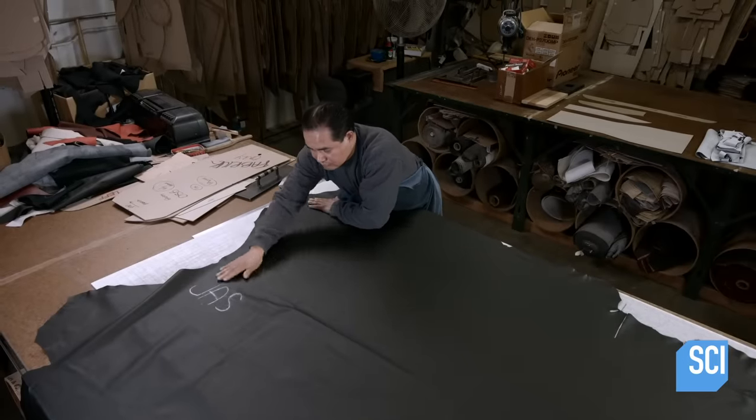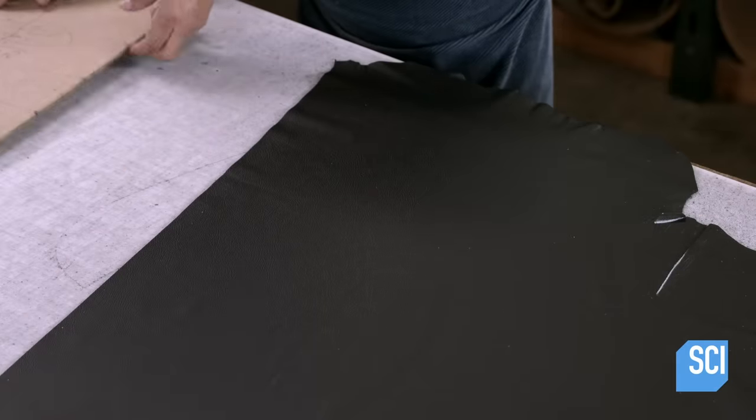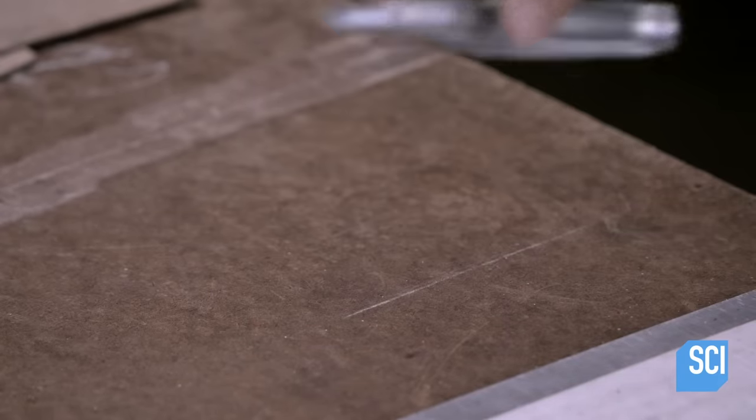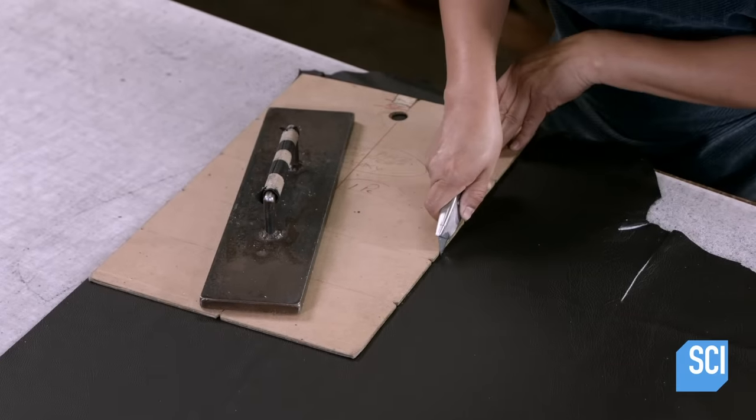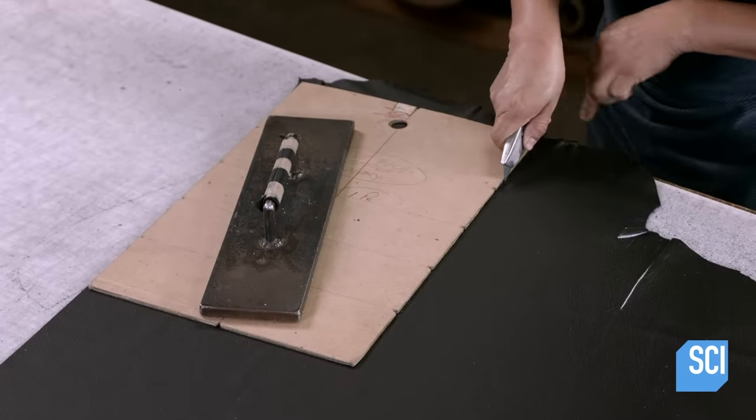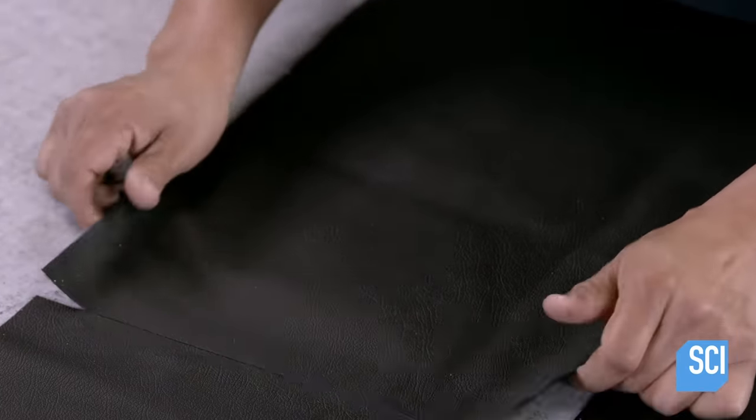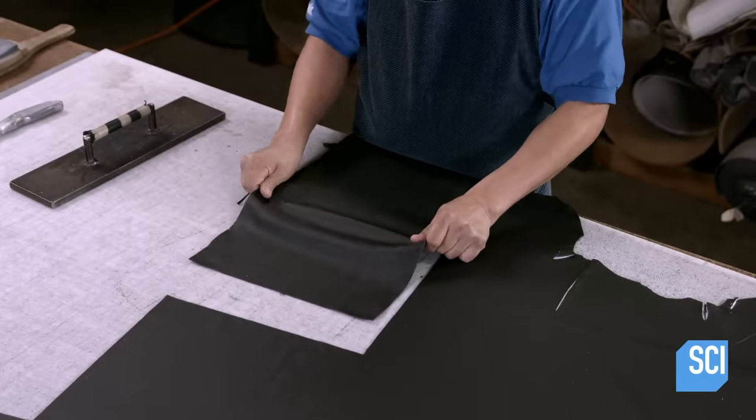In the upholstery department, another worker smooths a leather hide so that it sits evenly on the cutting table. He cuts out the patterns following cardboard templates. As he cuts, he works around the natural flaws in the hide, making calculated decisions to minimize waste.